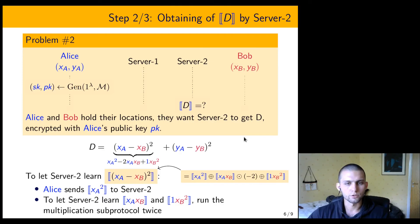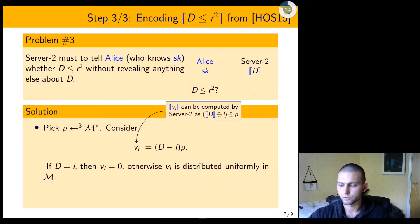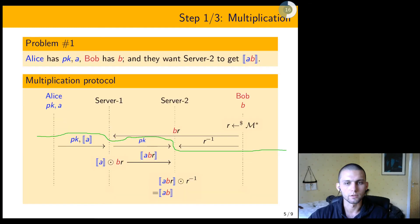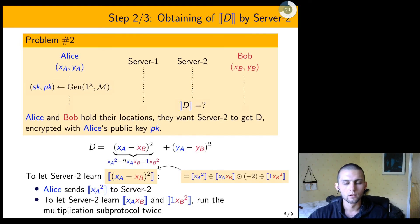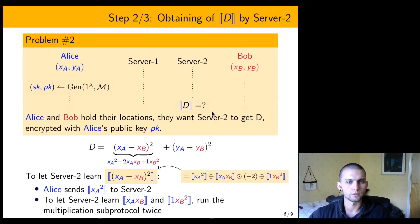Both runs of the multiplication sub-protocol should happen in parallel, so that the property that all of Bob's messages go before all of Alice's messages is still satisfied for both runs. Now we know how to let the server learn the encryption of the square distance.